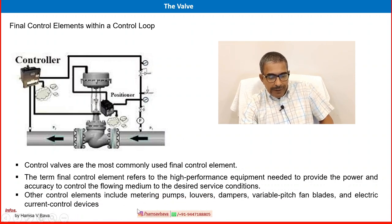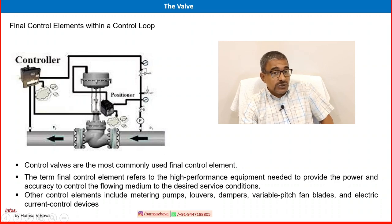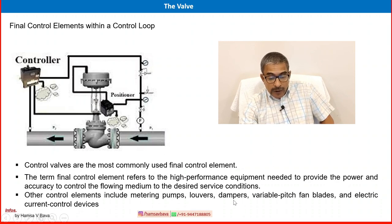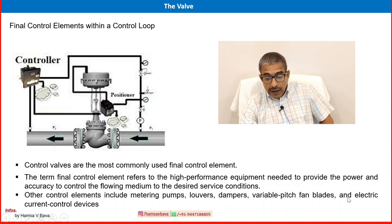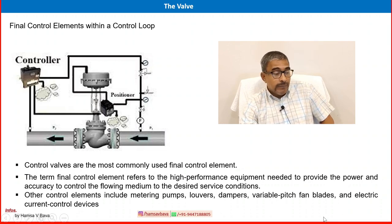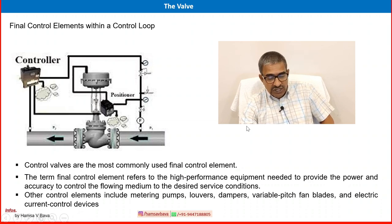Other final control elements include metering pumps, louvers, dampers, variable pitch fan blades, and electric current control devices. Many other locations in the process use a final control element: metering pumps, louvers in fan coolers, dampers for air supply into boilers or furnaces, and electric current control devices — these are all final control elements used in the process industry.